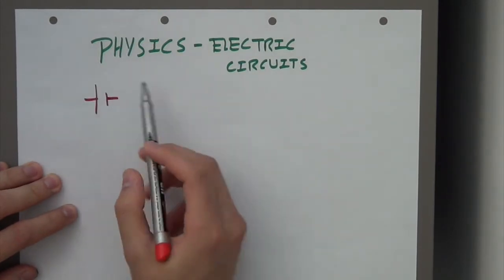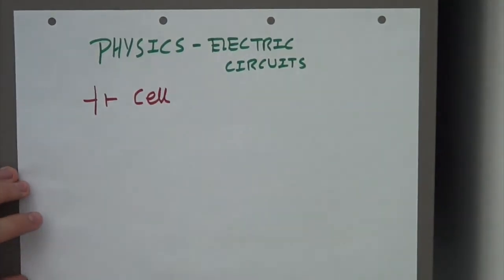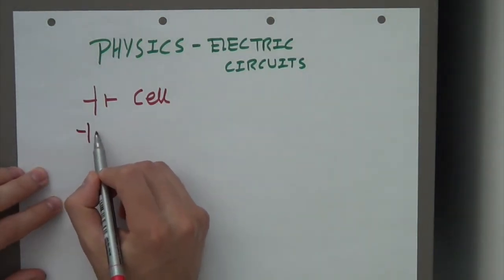The first one we're going to learn is this one. This is a cell. The way I tell students to remember this is think of prison cells - they're just like single rooms in a prison. When we translate this to electricity or electric circuits, they're basically the singular units of a battery.